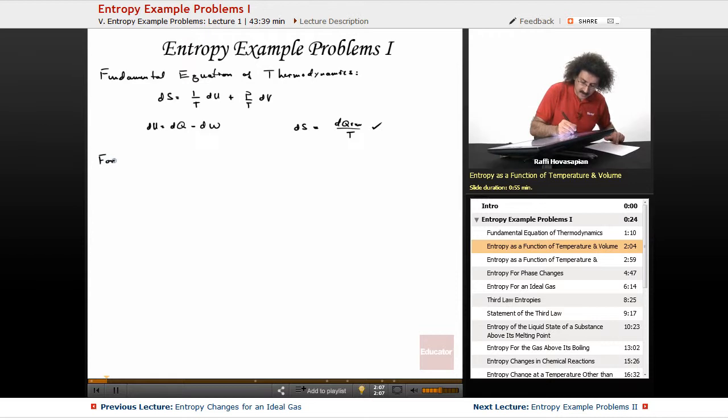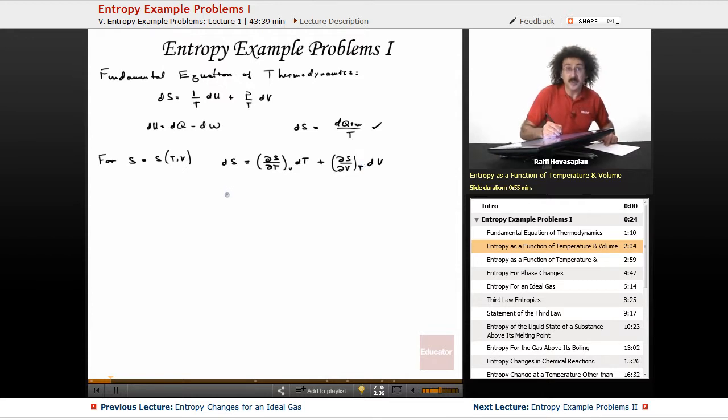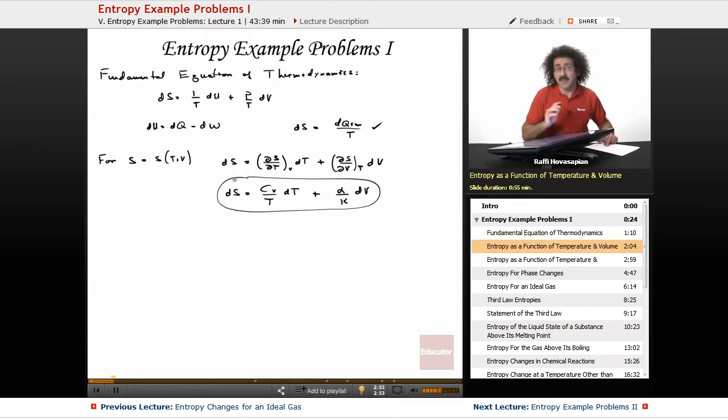Now, for entropy as a function of temperature and volume, this is what you want to know. You want to know the total differential expression, which is always easily derived. You just take the derivative. So it's going to be ds over dt constant V dt plus ds dv under constant T dv. And the actual equation that you want to bring to the table is ds equals cv over T dt plus alpha over kappa dv. This is the equation that you want to know, just like for energy. Absolutely. You have to know this. Most problems begin with this equation or the next one that I'm going to write.